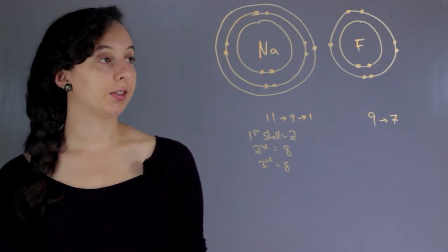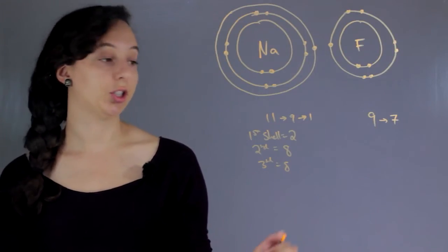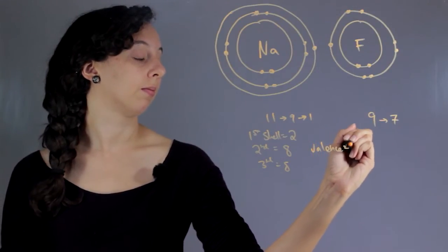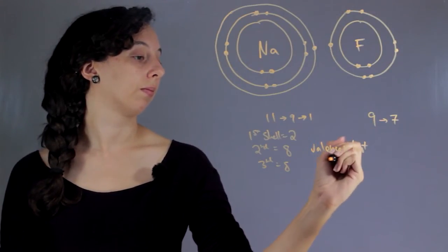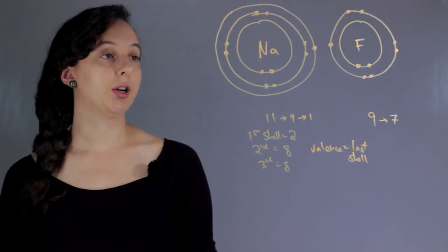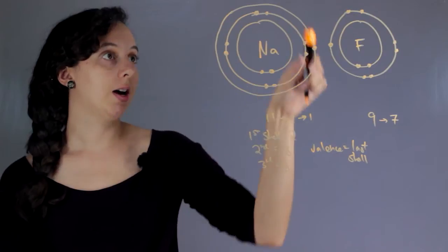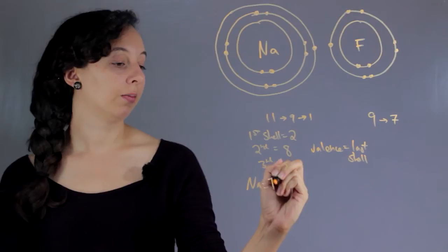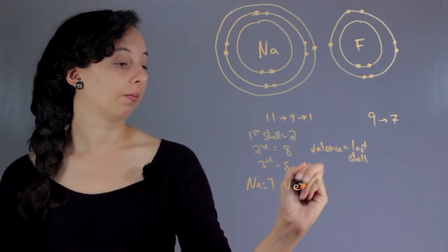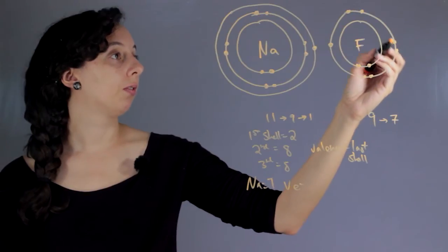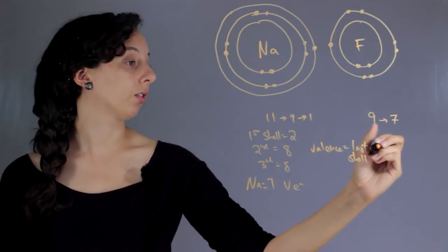So now we have our shells all written. And a valence electron is anything in the last shell. So we would say that sodium, check its last shell, it only has 1. So we say sodium has 1 valence electron. And that fluorine has 1, 2, 3, 4, 5, 6, 7 valence electrons.